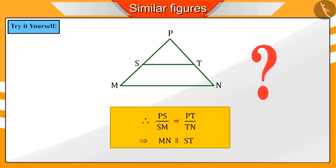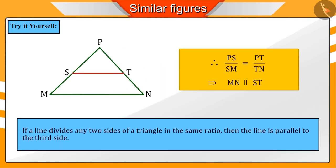Can you test the converse of this theorem? Will this also be true? If a line divides any two sides of the triangle in the same ratio, then this line is parallel to the third side of the triangle.